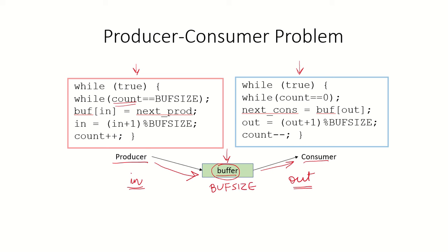We have a variable count which specifies the number of items produced by the producer and available in the buffer. If count equals buff_size, the buffer is full and the producer does nothing. Otherwise, the producer stores new information in a variable next_produced, puts it in the buffer at the in pointer, increments in modulo buff_size (since it's a circular queue), and increments count by 1.